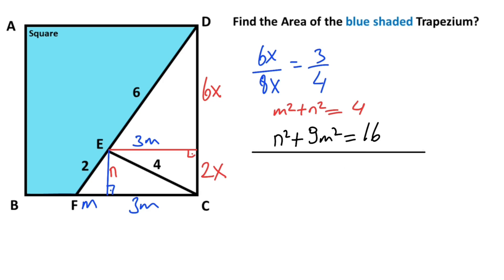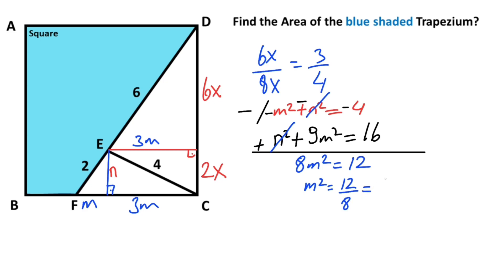If we multiply the first equation by minus one, these terms become negative. After adding the equations together, we get 8m squared equals 12, which means m squared equals 12 over 8, which is 3 over 2. Therefore m equals root 3 over root 2, which is root 6 over 2.